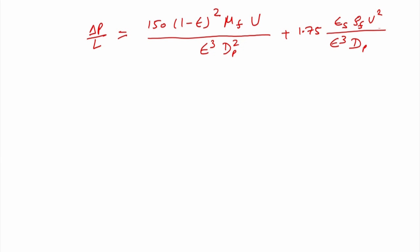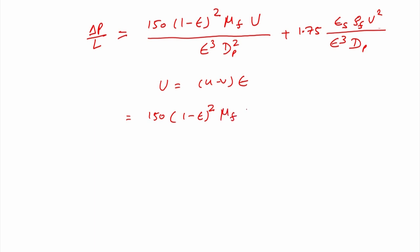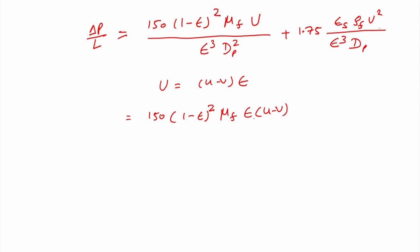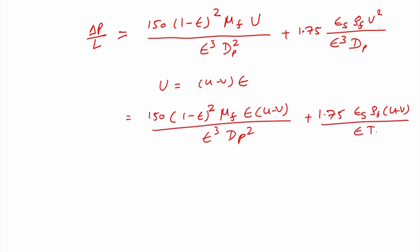Writing in terms of slip velocity, where u is written as (u - v) × ε, the Ergun equation becomes: Δp/L = 150 × (1 - ε)² × μ_f × (u - v) / (ε³ × d_p²) + 1.75 × ε_s × ρ_f × (u - v) / (ε² × d_p). This is the Ergun equation written in terms of slip velocity.